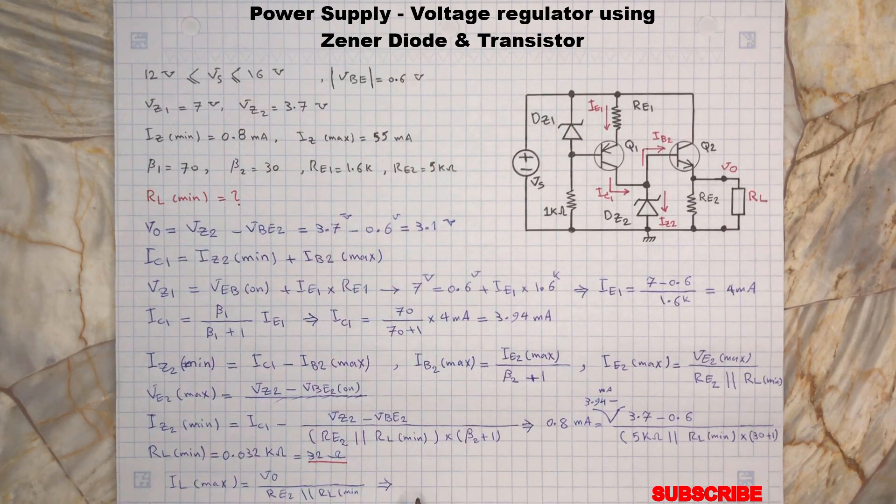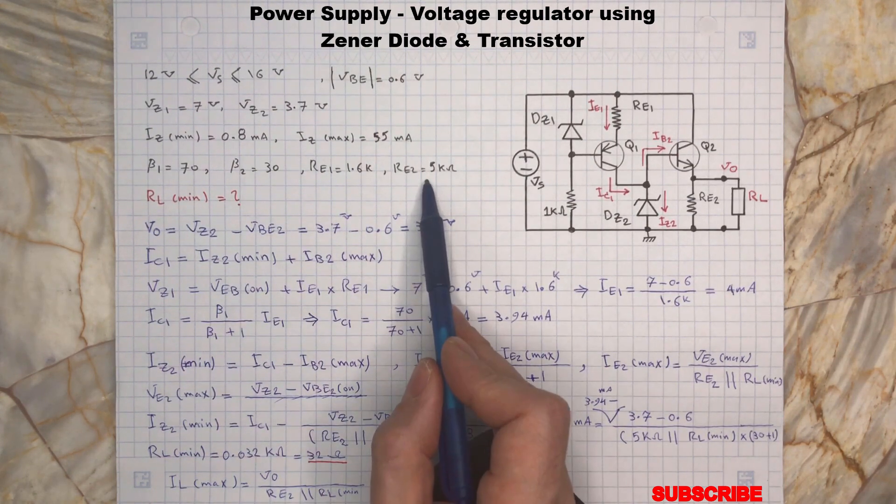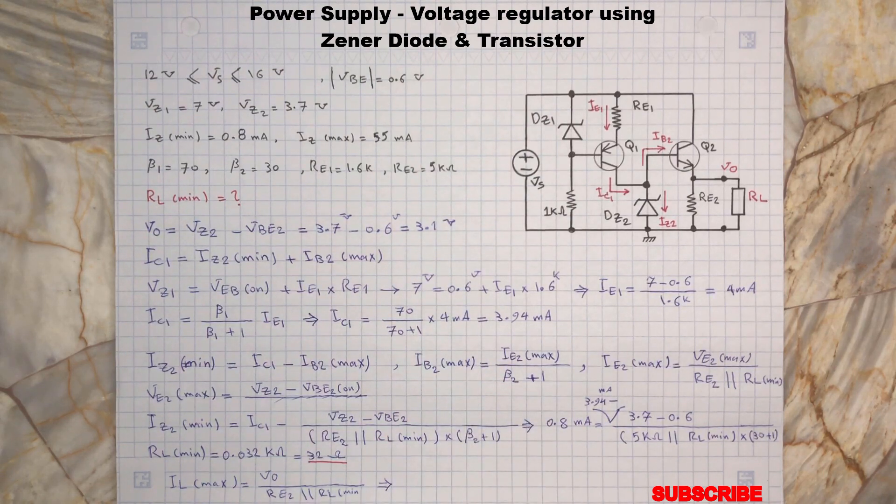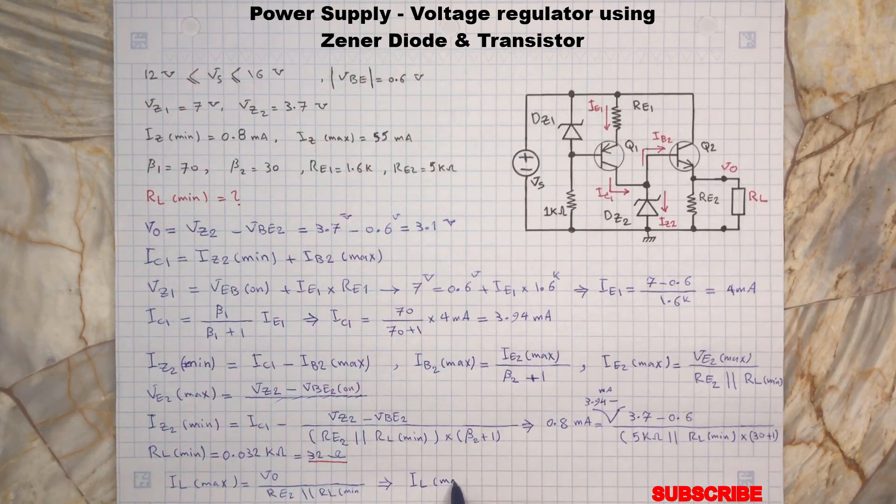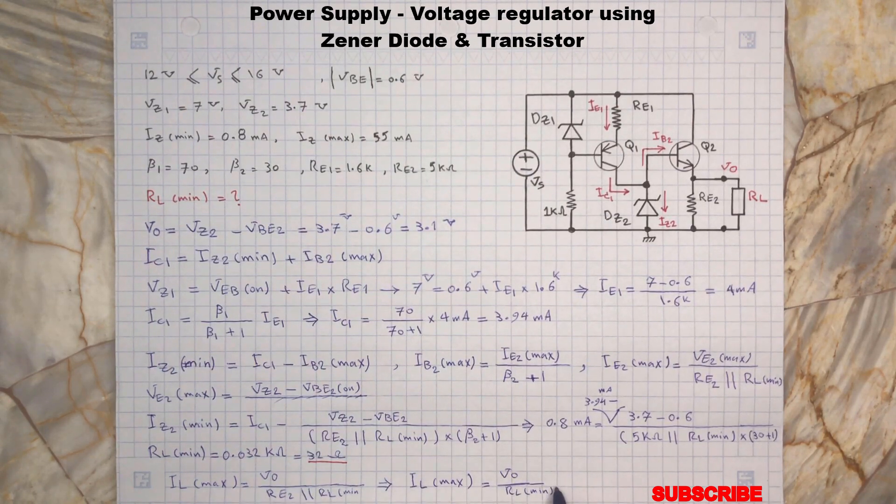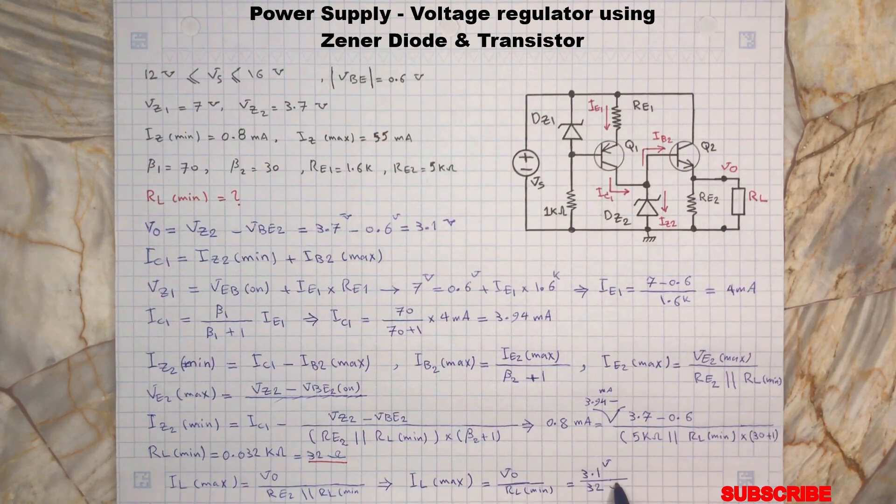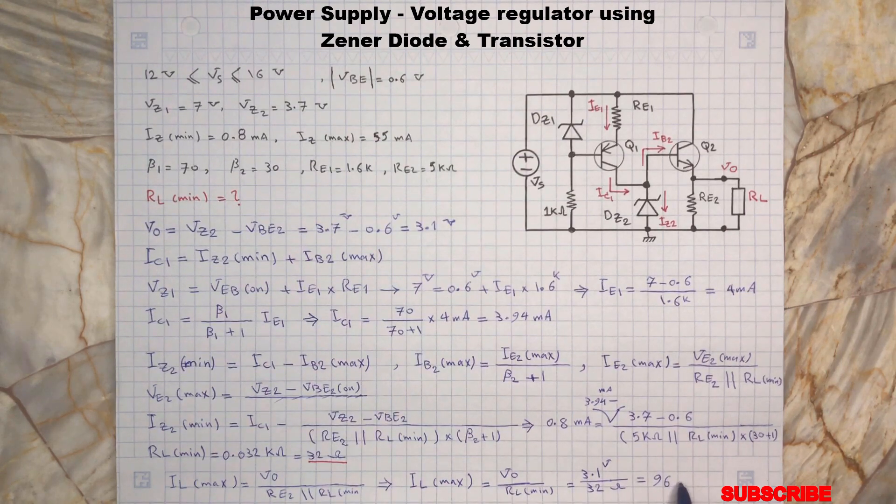And since the RE2 is very large compared to the RL min, then with a good approximation, we will have...